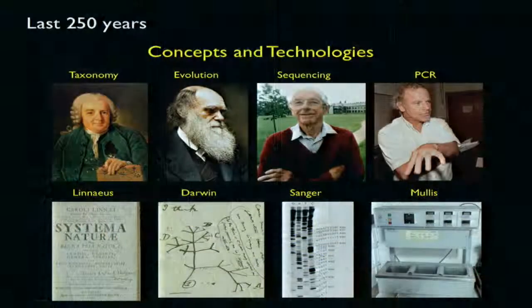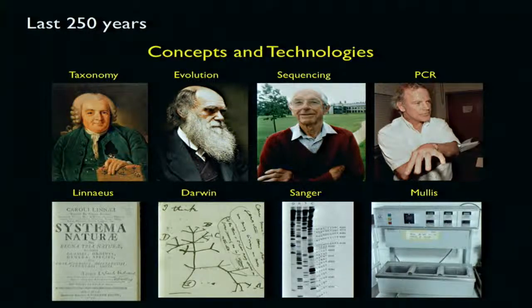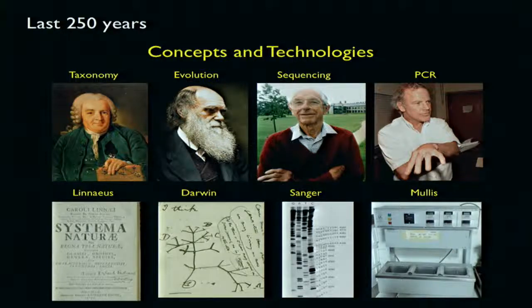How can technologies make this system better? This is a journey that started a long time ago. There are concepts and technologies kind of working together. Linnaeus came up with the modern taxonomic approach, then Darwin gave us the framework of classification and linkages of organisms. Then genomics technologies — like Sanger sequencing — and Kary Mullis's PCR followed. We are now at a very interesting time because technologies are giving us new concepts.